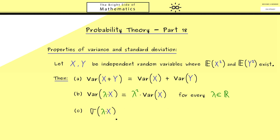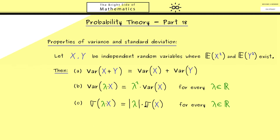Now you might have the idea that we should formulate the second rule for the standard deviation as well, because there the square should vanish in the definition. The standard deviation sigma of lambda times X is simply the square root of the variance. This means on the right hand side the square of lambda vanishes, but now we have the absolute value there. This makes sense because the standard deviation has to be always positive. So you can pull out a scalar from the standard deviation, but then you forget about the minus signs — if you just look at positive numbers, this is a homogeneous property.